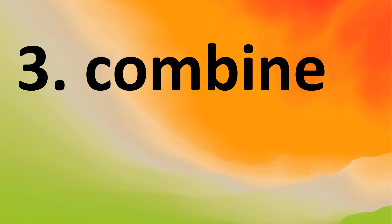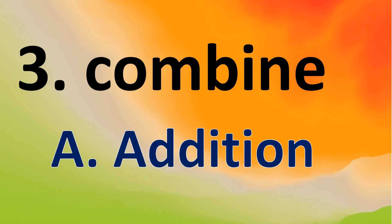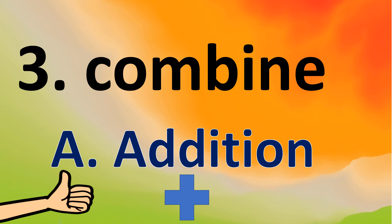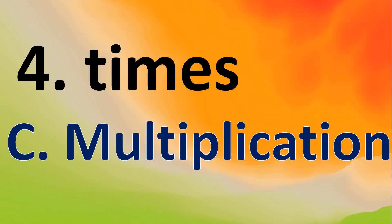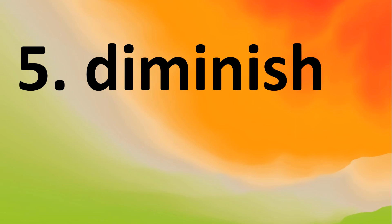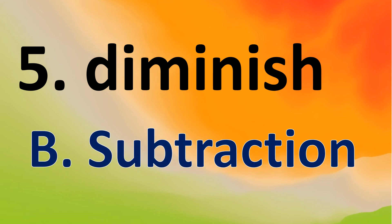Number 3: combine. What operation will it be? Combine — it's letter A, addition. Number 4: times. What operation? Times — very good! It's multiplication. Number 5: diminish. What operation? Diminish — good job! It's letter B, subtraction.